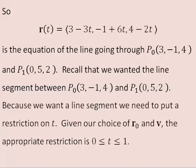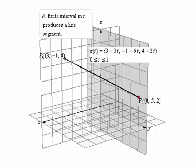At t equals 0, I would be at position p-naught. And then a unit of time would put me at position p-one. And so with this choice of r-naught and v, t is restricted between 0 and 1.